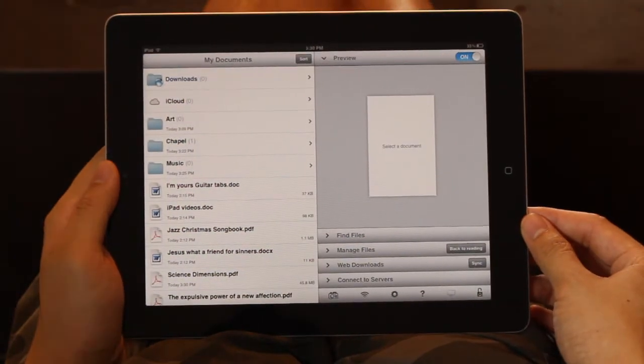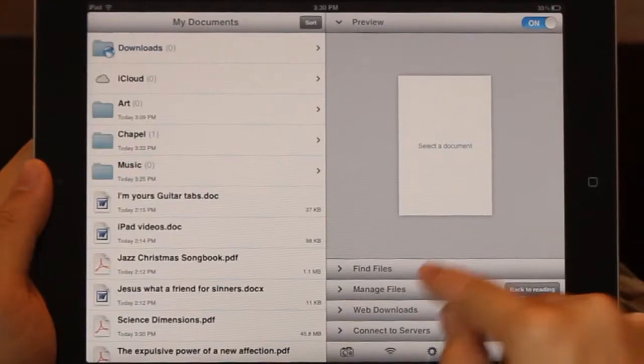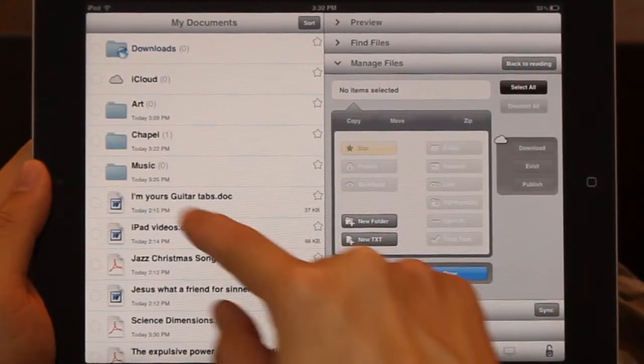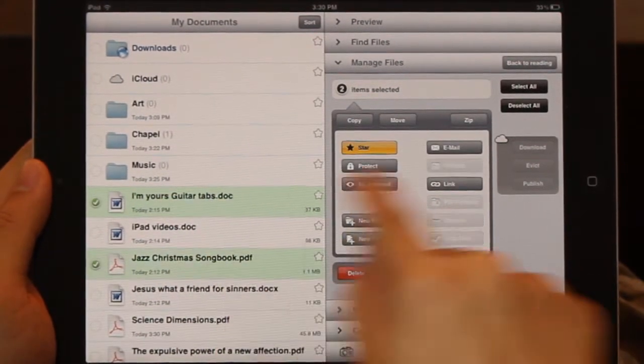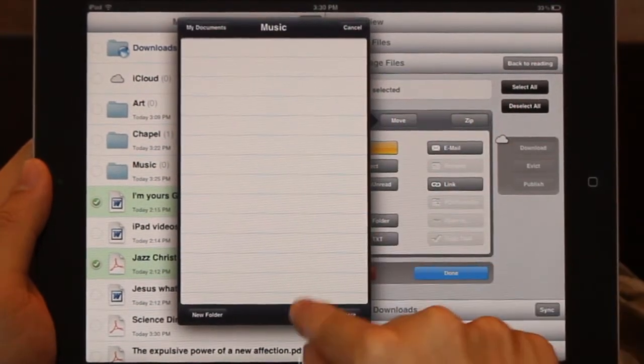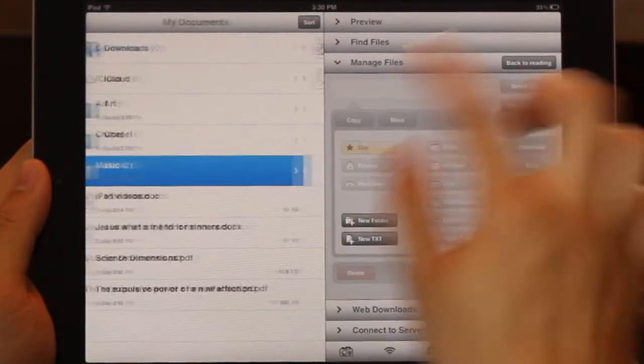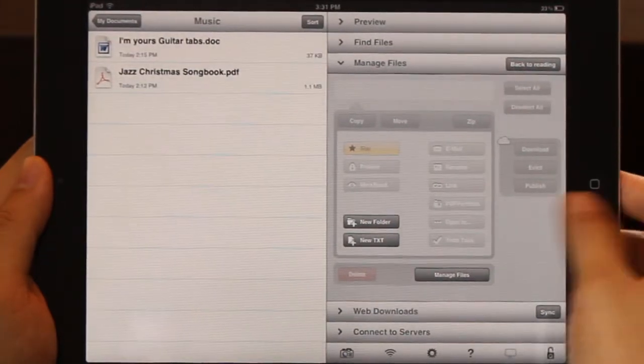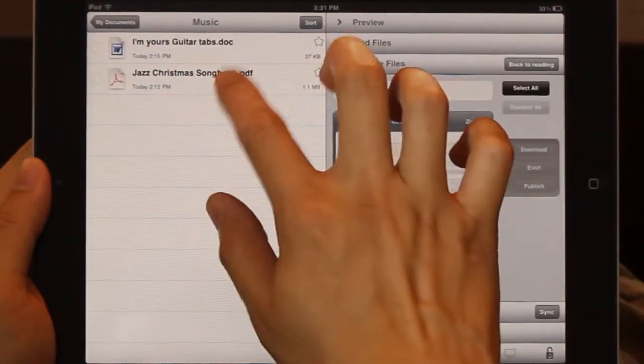With Goodreader, you can also organize your files into folders. Selecting manage files lets you create new folders, delete or move files around, even email files to others.